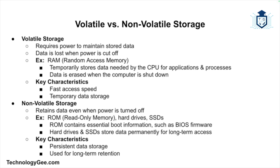Once you shut down your computer, any data in the RAM is erased. Volatile storage is also very fast and temporary. Non-volatile storage, on the other hand, retains data even when the power is turned off, making it suitable for long-term storage. ROM, or read-only memory, is a type of non-volatile memory containing critical boot information such as the BIOS firmware. Other examples include hard drives and SSDs.